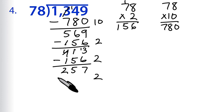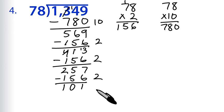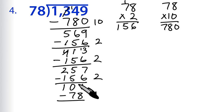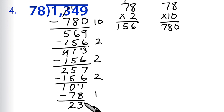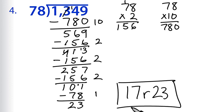We're at 101, and now our multiple of 2 — 156 — is too big. So we subtract 78 itself: 101 minus 78 is 23. Adding up all our partial quotients: 10 plus 2 plus 2 plus 2 plus 1 is 17. So we have 17 with a remainder of 23. That is what you get when you divide 1,349 by 78.